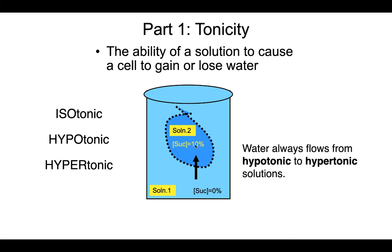If the two solutions were the same concentration of solute, same is iso, so they would be isotonic to one another. Once you have defined the relationship between the two solutions — which one is hypertonic and which is hypotonic — you can predict the net direction of water flow. Water always flows from the hypotonic solution to the hypertonic solution. Since the outside solution here is hypotonic and the inside is hypertonic with higher sucrose concentration, water is going to flow from outside to inside the bag.